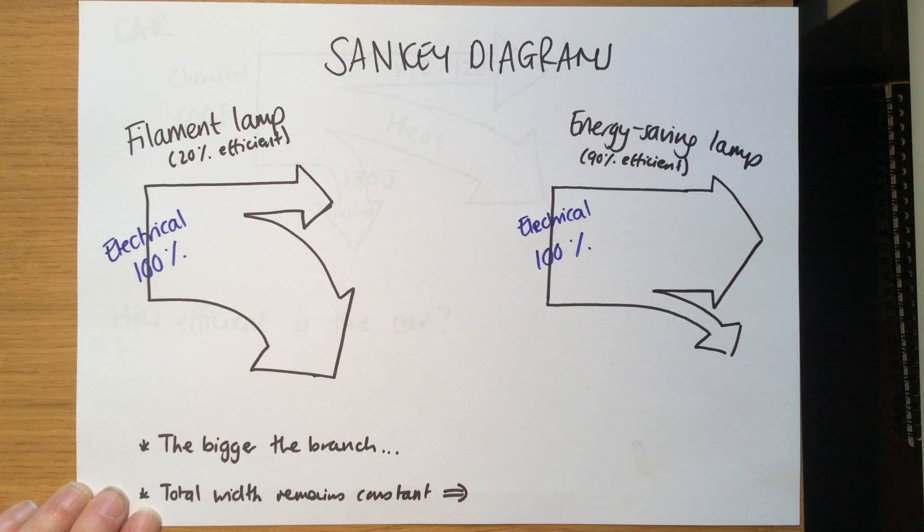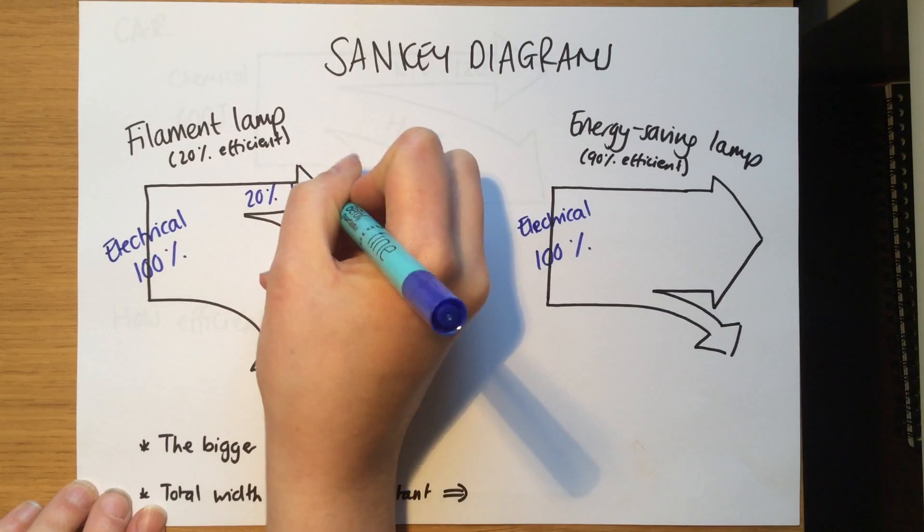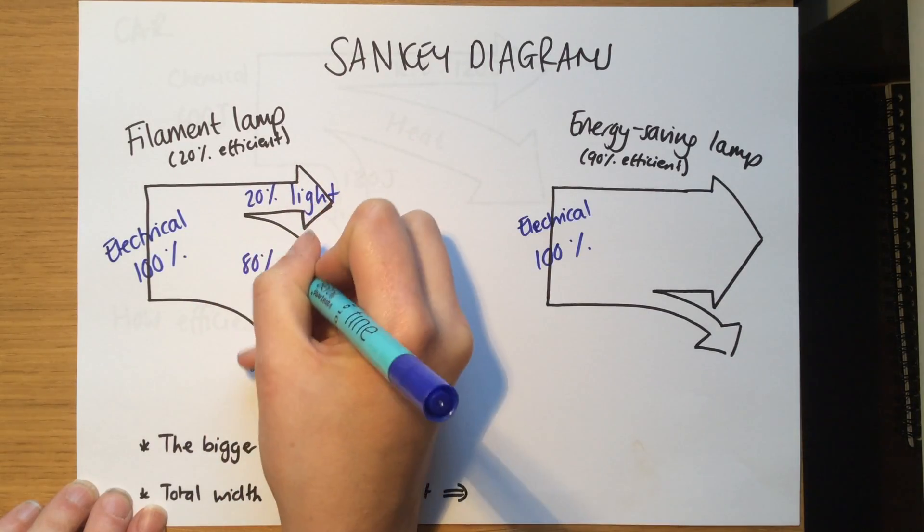Now a filament lamp only uses 20 percent of its energy as light and the other 80 percent is wasted as heat.